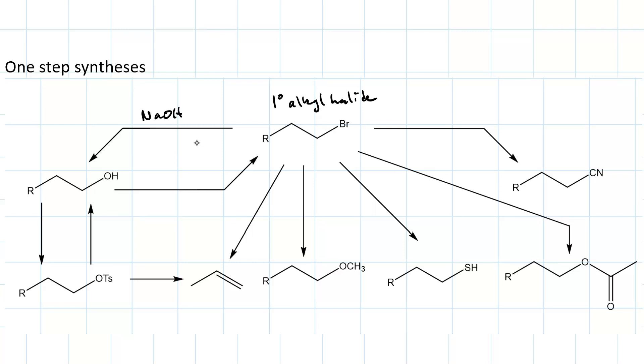If we then wanted to turn that alcohol into a tosylate, we'd use tosyl chloride and pyridine. To go back to the alcohol, we could use sodium hydroxide. To go from the alcohol back to the alkyl halide, we could just use the sodium salt of the halide.